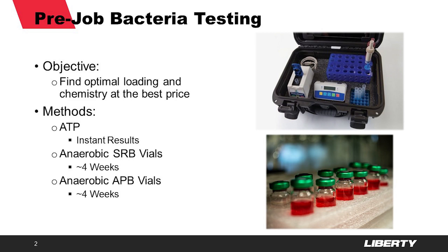The two main bacteria-related issues in the oil field are H2S from sulfate-reducing bacteria and corrosion from acid-producing bacteria that can survive in anaerobic conditions. The vials in the bottom right-hand corner of the screen are used to culture the treated fluid and check if either of these types of bacteria can reproduce.